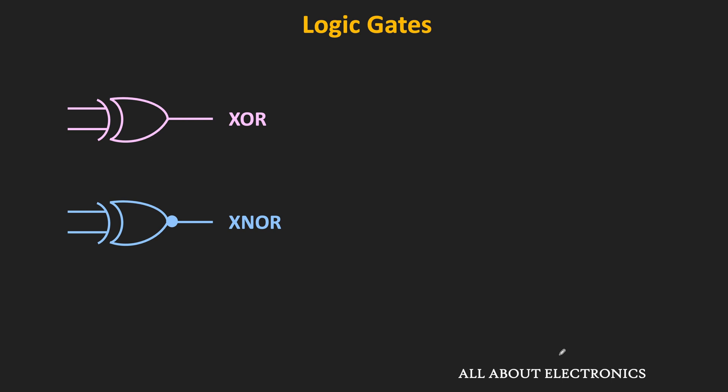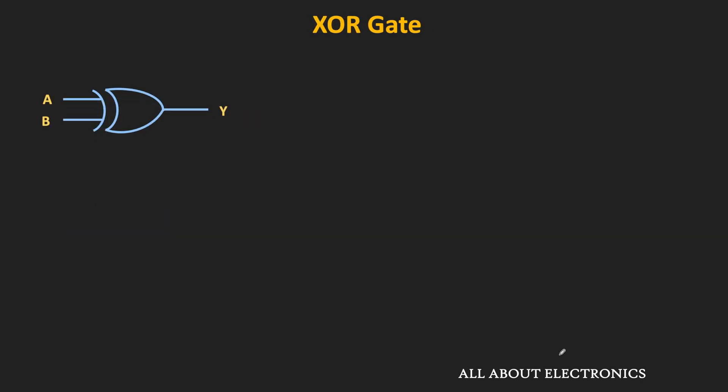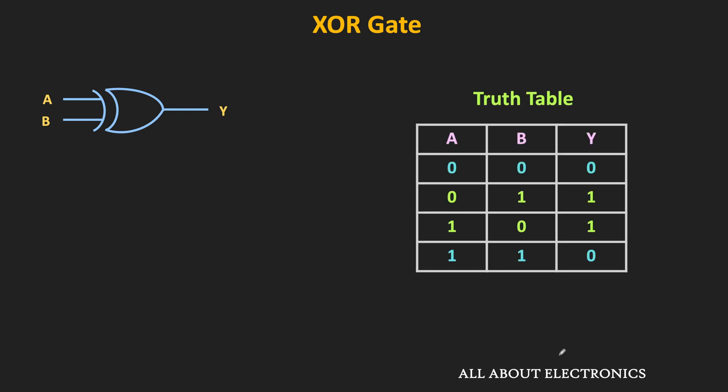First of all, let us start with the XOR gate. This XOR gate is also known as the exclusive OR gate. This is the symbol of the two-input XOR gate, and here is the truth table of the two-input XOR gate.